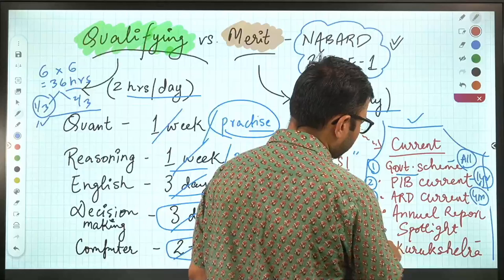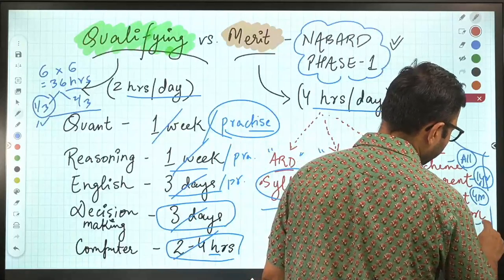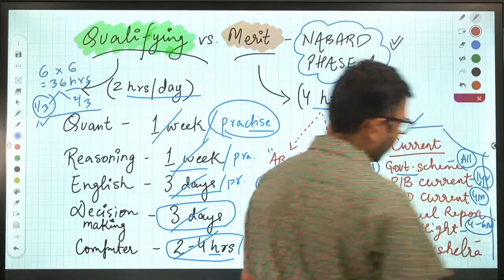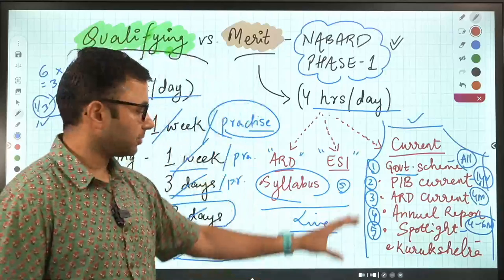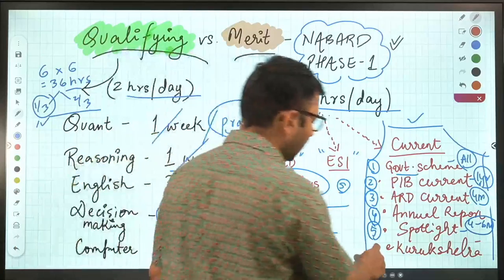The fifth one is spotlight that you have to cover. Four to six months. Not more than that. Not one year. Four to six months will do.